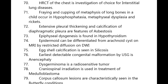Epiphyseal dysgenesis is found in hypothyroidism. Epidermoid can be differentiated from arachnoid cyst on MRI by restricted diffusion on DWI. Eggshell calcification is seen in silicosis. The earliest detectable congenital malformation by ultrasound is anencephaly. Dysgerminoma is a radiosensitive tumor. Cranial-spinal irradiation is used in the treatment of medulloblastoma.